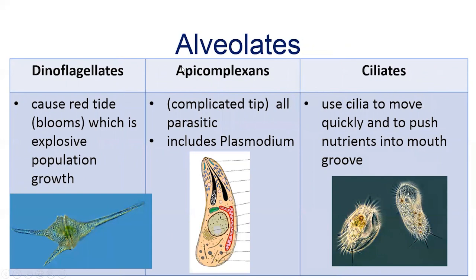Next let's look at alveolates, which have three subgroups: dinoflagellates, apicomplexans, and ciliates. Dinoflagellates are what cause the red tide or blooms, which is explosive population growth that leads to discoloration of the water. Apicomplexans — the name stands for 'complicated tip' — are all parasitic, and these complicated tips are what they use to invade hosts. Ciliates just use cilia to move and push nutrients into their oral groove.